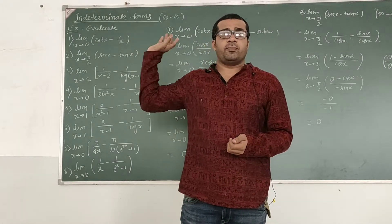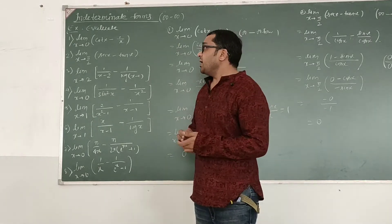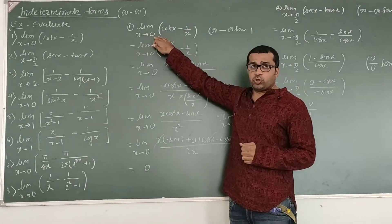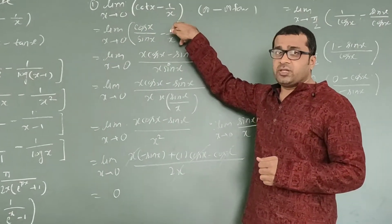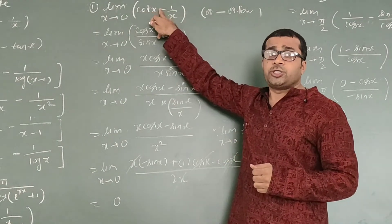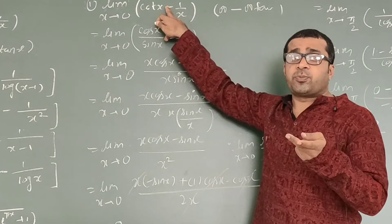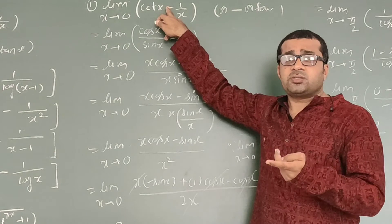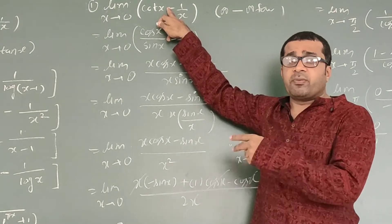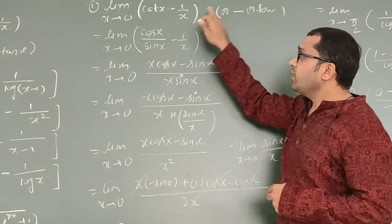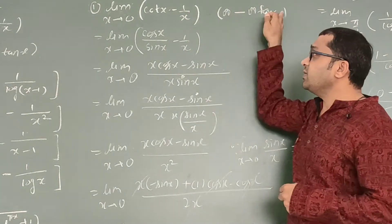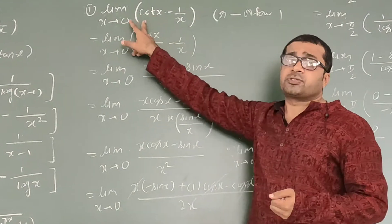Let us see today the indeterminate form — some examples on the infinity minus infinity form. The first example: limit as x tends to 0 of (cot x − 1/x). We check the form: cot 0 is 1/0, which is infinity, and 1/x at x=0 is also 1/0, which is infinity. So this is the infinity minus infinity form.